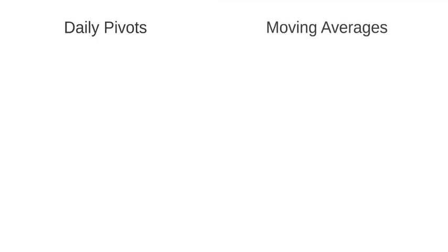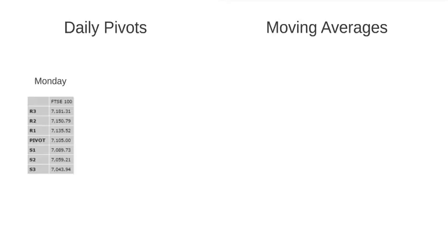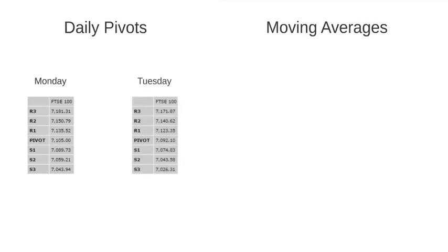Daily pivot levels are specific levels of support and resistance that change on a daily basis. I will have a set of daily pivot levels plotted on my chart on Monday, and then these levels will change on Tuesday. Monday's pivot levels are no longer of interest to me on Tuesday as all the levels have changed.